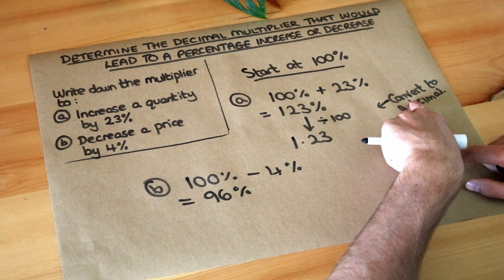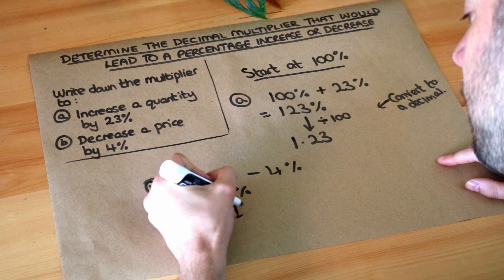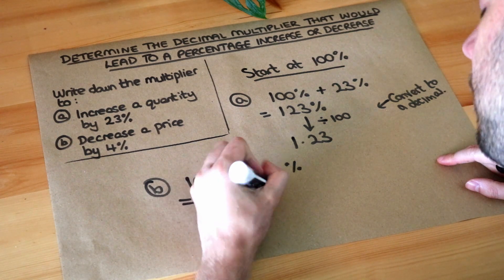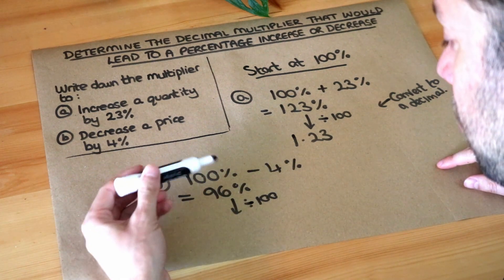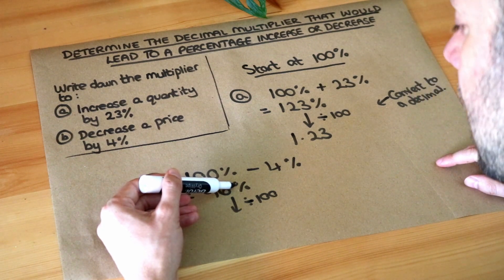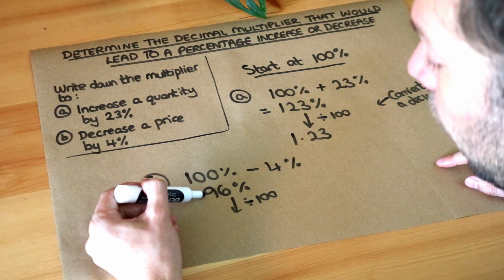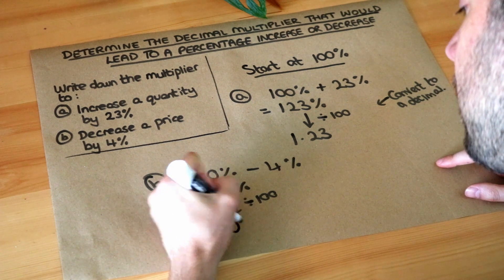And as before, we need to convert that percentage to a decimal. So we divide by 100. At the moment, the decimal point is at the end of the number. So it's 96.0 if you like. And it moves two places to the left if we divide by 100. So 1, 2. So it's 0.96.